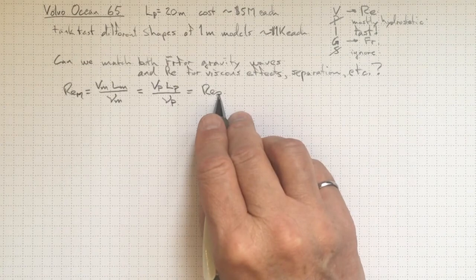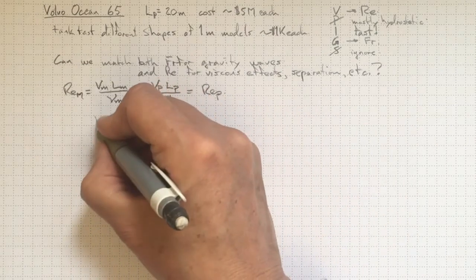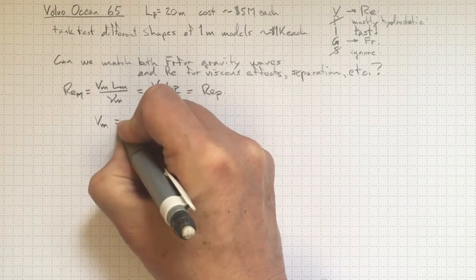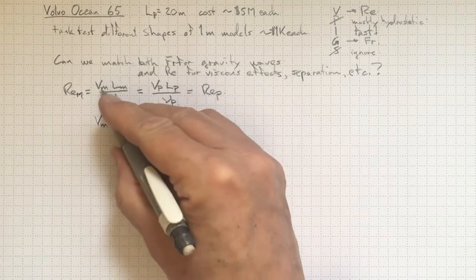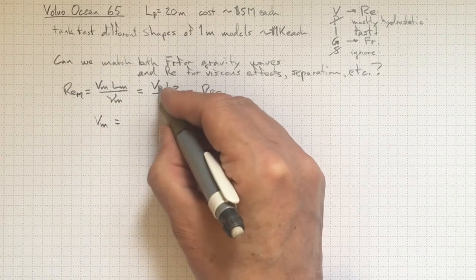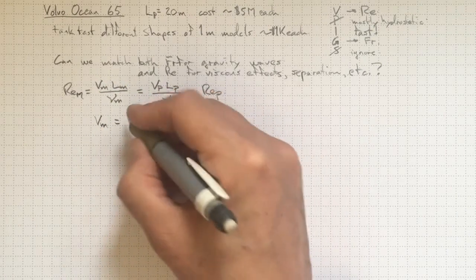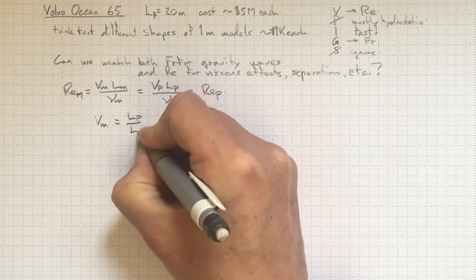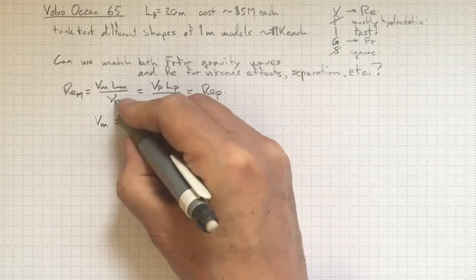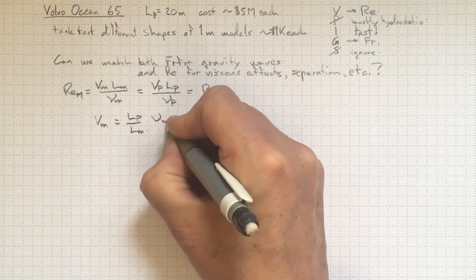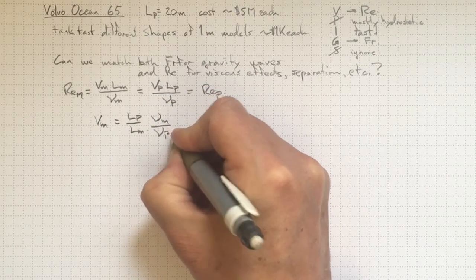If we want our Reynolds numbers to match model and prototype, then we'll have to set the model velocity so that it makes them equal. The model velocity will be equal to the prototype velocity times the length of the prototype divided by the length of the model, the viscosity of the model divided by the viscosity for the prototype, all times the prototype velocity.